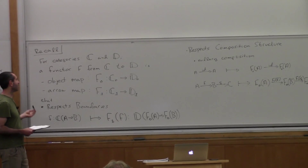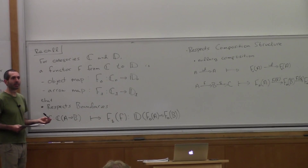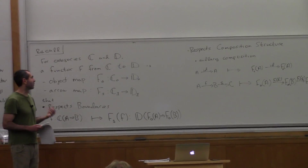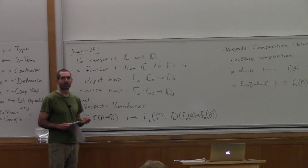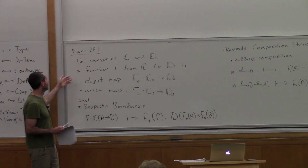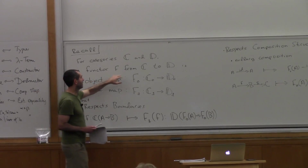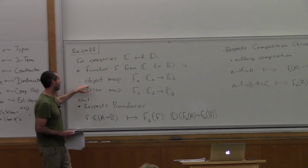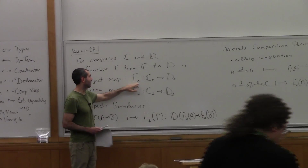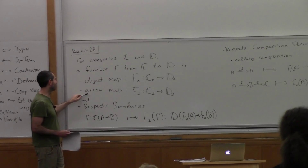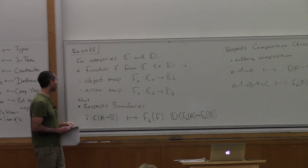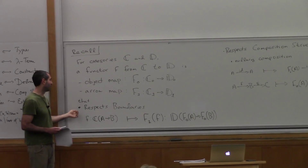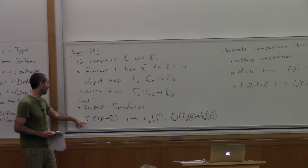Last time we defined what a functor was. The idea was that a functor should be a morphism between categories. Because a morphism should be, at least morally, some kind of structure-preserving map, we ask ourselves: what is the structure of a category that should be preserved? A functor has a domain, a codomain category, and then it has to tell you what to do for objects — with a subscript zero for the object map — and what to do for arrows.